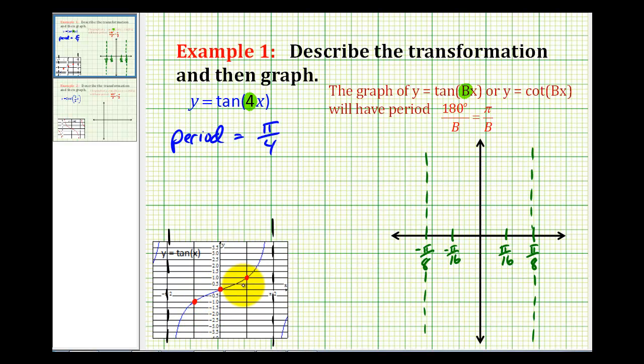And now we'll locate these three corresponding points on the transform graph and then we can make a nice sketch of the given function. At the first fourth, the function value will be negative one here. At zero, it'll be equal to zero. And at pi over sixteen, it'll be equal to positive one.